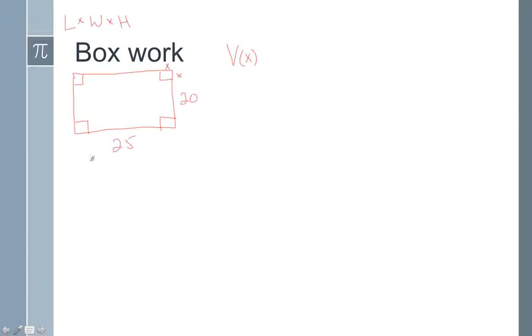If you were to think about this box, the length of the box is not going to be 25. It's going to be 25 minus the x's on both sides. So the length is 25 minus 2x. The width is 20 minus 2x. And the height of that box when we fold up these sides is going to be x. Notice here we have a cubic function.